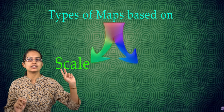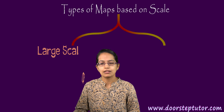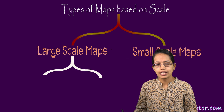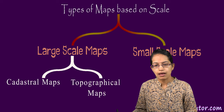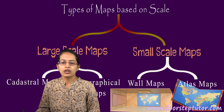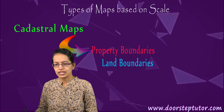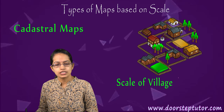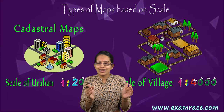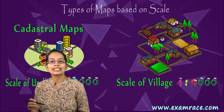Maps can be classified based on two criteria: scale and function. Based on scale, maps are divided into large scale and small scale. Large scale maps are further divided into cadastral maps and topographical maps, while small scale maps include wall maps and atlas maps. Cadastral maps show property boundaries and land boundaries. For villages, a scale of 1:4000 is used; for urban areas, 1:2000 — depicting a small area with minor details, hence a large scale map.